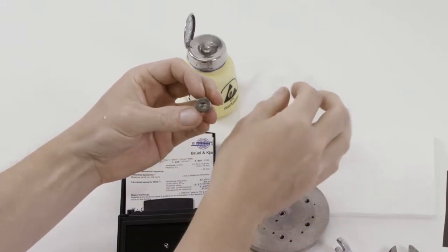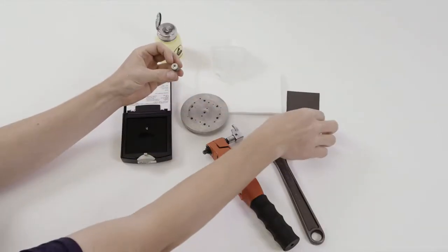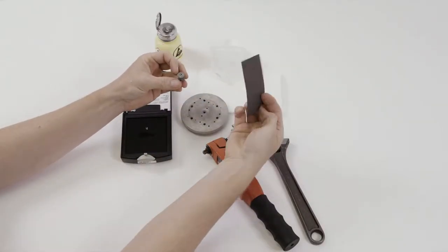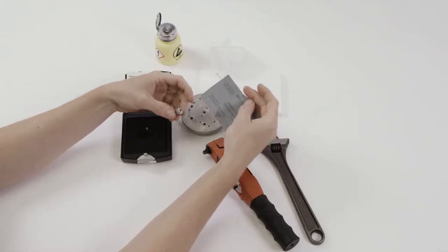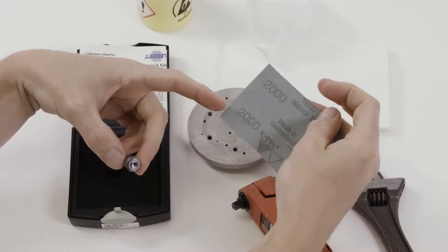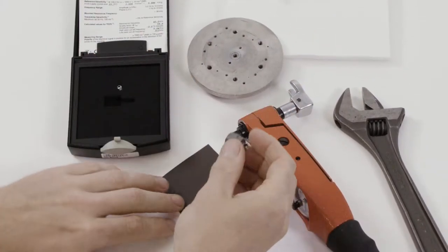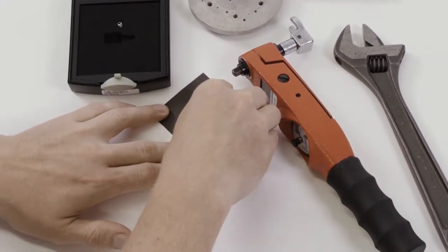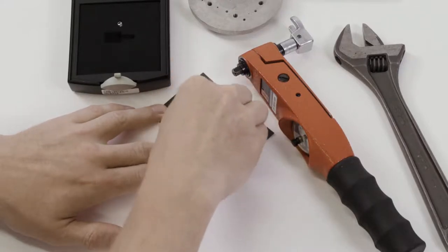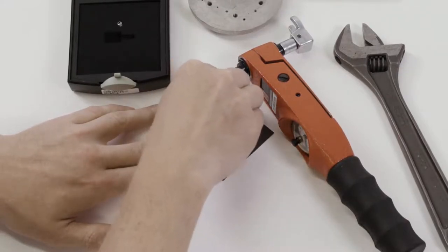In case minor damage has incurred on the mounting surface, the use of a fine sanding paper, grade 2000 for example, is recommended. When lapping a surface for preparation to mounting, move the accelerometer in figure eight circles.